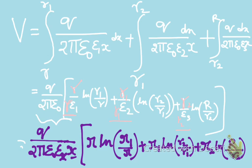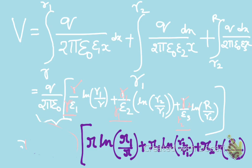Now we can replace the term Q divided by 2π ε₀ ε_x with a simple Emax, since we assumed operation at maximum electric field intensity. So the operating voltage formula becomes: V equals Emax times R times ln(R1/R), plus R1 times ln(R2/R1), plus R2 times ln(R3/R2). This is the formula for the voltage at which the operation is done. If you have any doubts you can refer to the first figure shown. Hope this helped you — have a lovely day ahead. Bye.